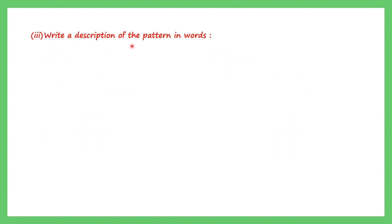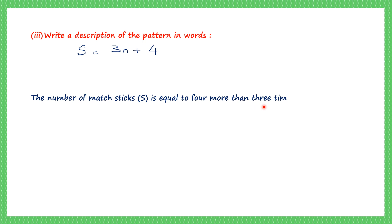Question 3: write a description of the pattern in words. We have the pattern S = 3n + 4, where S is the number of matchsticks. In words: the number of matchsticks S is equal to 4 more than 3 times the number of the figure n.